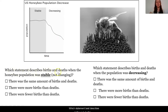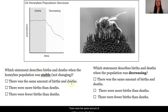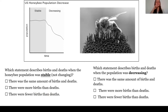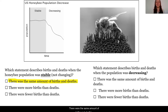Which statement best describes births and deaths when the honeybee population was stable? There were the same amount of births and deaths? There were more births than deaths? Or there were fewer births than deaths? I'm going to give you a second to think about this for yourself. Did you get the same idea as me? There were the same amount of births and deaths.